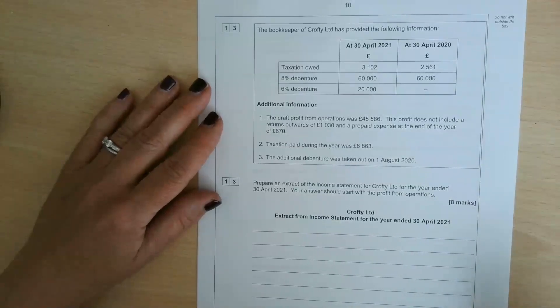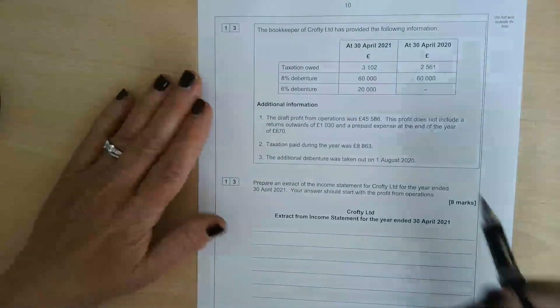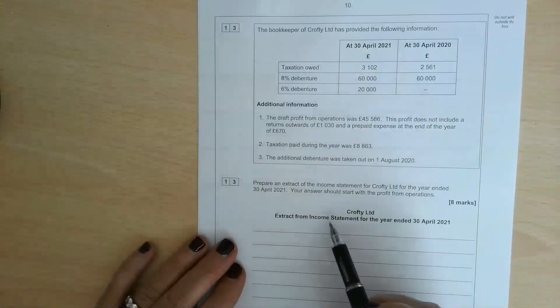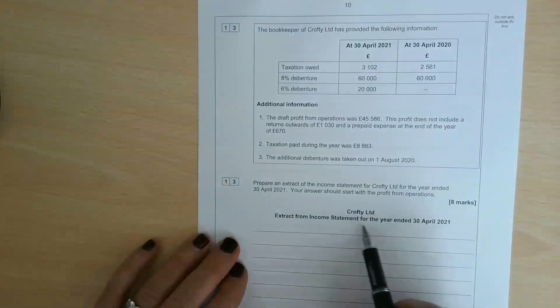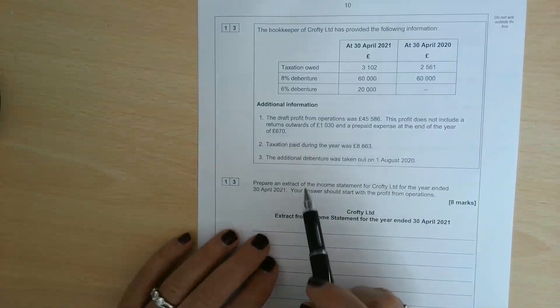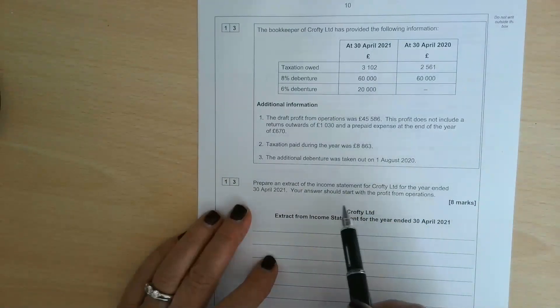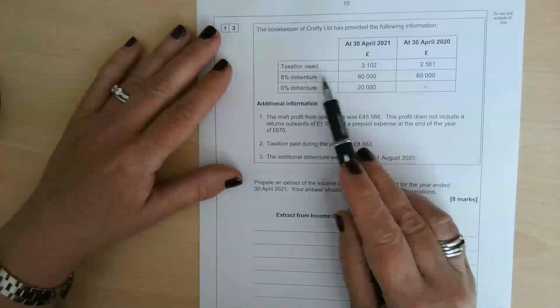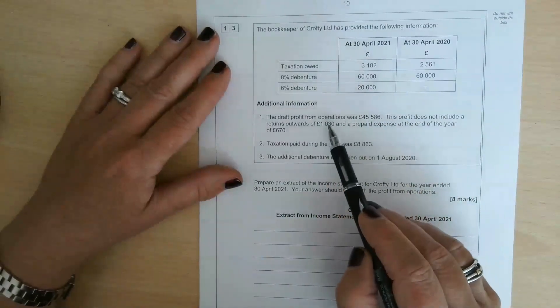Question 13 from the June 21, paper 7127-1. This is asking you to prepare an extract from the income statement for Crofty Limited starting with the profit from operations. We've got some information here about tax and about debentures.